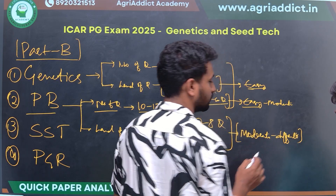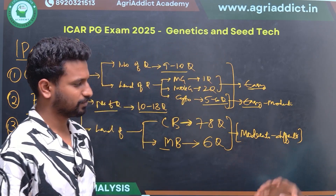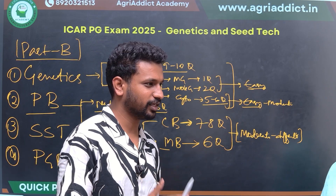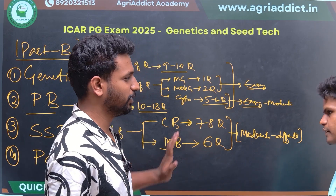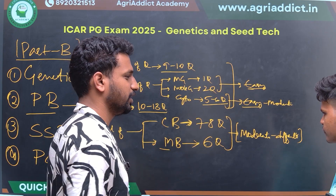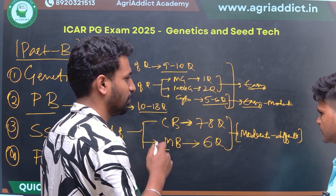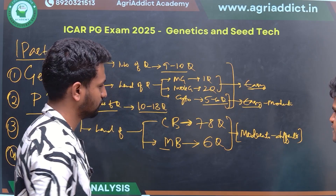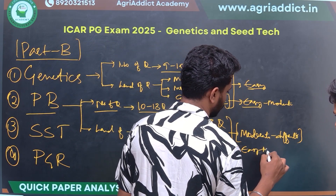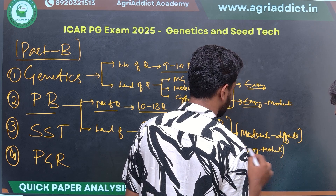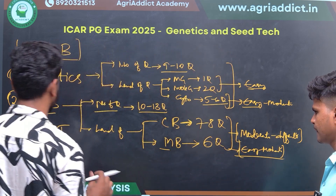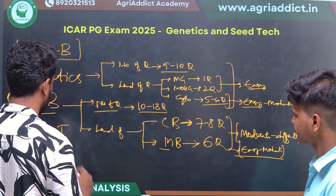Since Manjan is from Seed Technology, Plant Breeding felt moderate to difficult for him. However, when he interacted with Genetics students at IARI, they found Plant Breeding to be easy to moderate. So the perceived difficulty varies depending on the student's background subject.